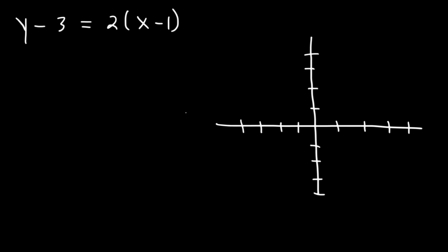Now the first thing you should do is identify the slope and the point, the x, y ordered pair. So here's the original equation. We can see that the slope is equal to 2. So m is 2.